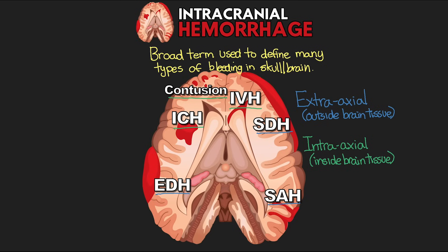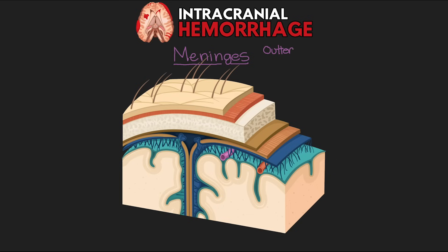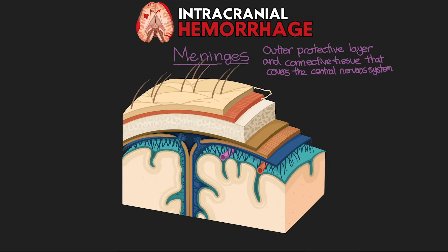To really understand where these bleeds are, we need to talk about the anatomy of the meninges — the outer protective layer and connective tissue covering the central nervous system, particularly the brain and spinal cord. The meninges has three primary layers. Above it we have the scalp and the skull bone. Then below the skull is where the meninges begin, starting with the dura mater.